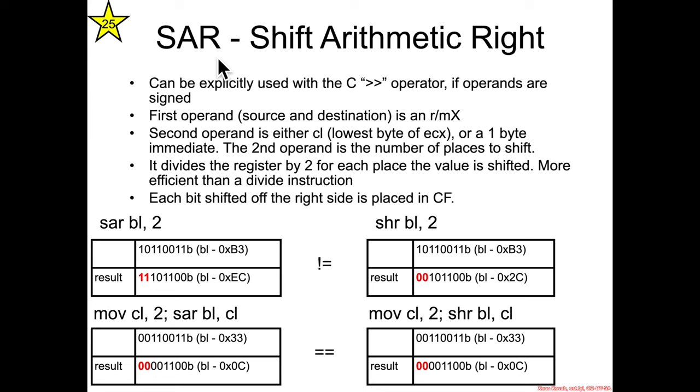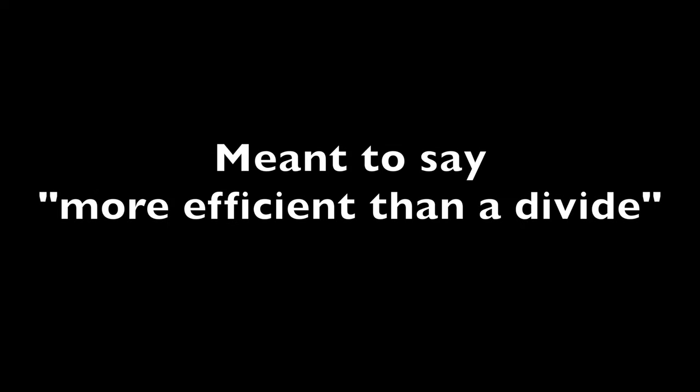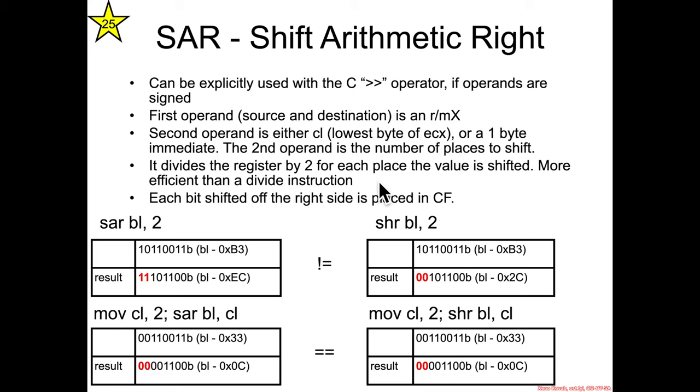So now we have a shift arithmetic right instead of a shift logical right. This can also be generated by the C >> operator if the operands are signed. Same form as before: source/destination of an RMX and CL or one byte immediate to say how many places to shift. It's a shift right, so it's again dividing by 2, and it's more efficient, and that's why a compiler might use it.